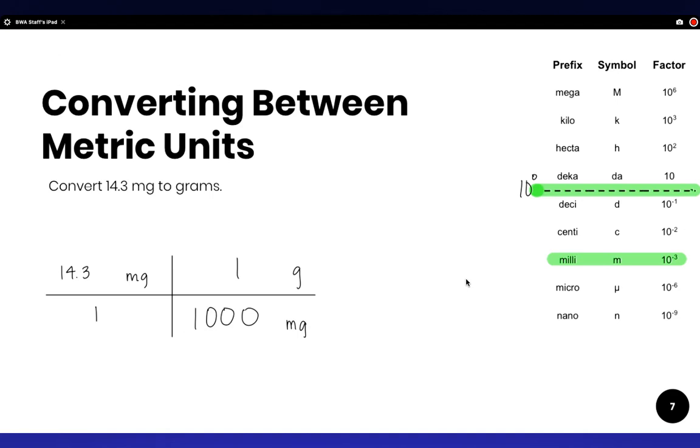So a thousand. Okay, so let's multiply everything on the top by everything on the bottom.